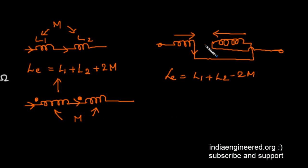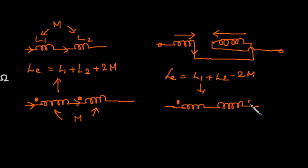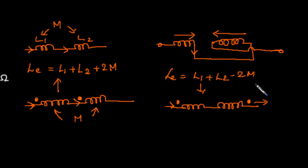Now for the opposing case: in the first coil the current is entering the dotted terminal, but in the second coil the current is leaving the dotted terminal. When current enters one dot and leaves the other, it is said to be opposing, so the equivalent impedance will be L1 plus L2 minus 2M.